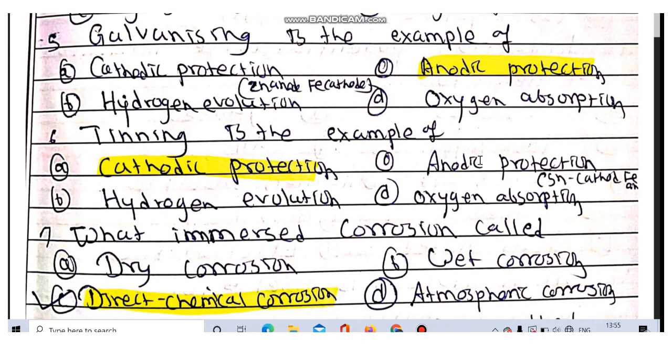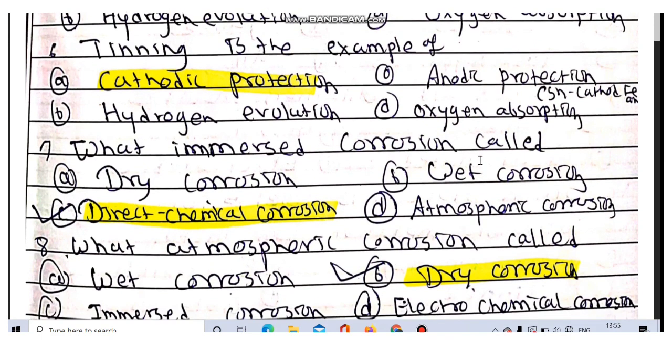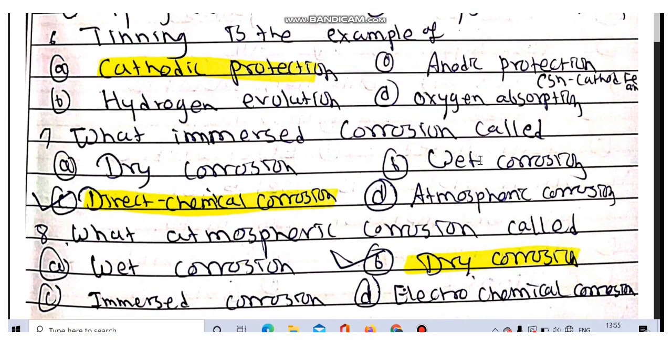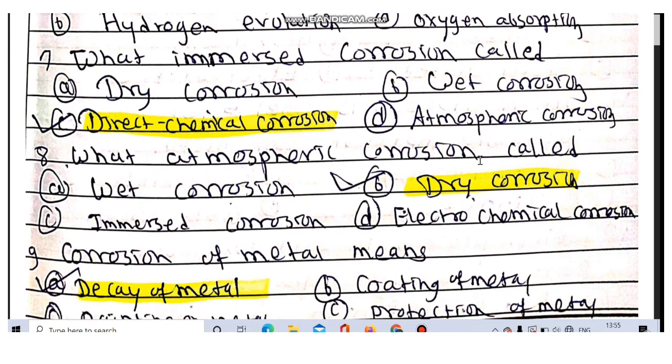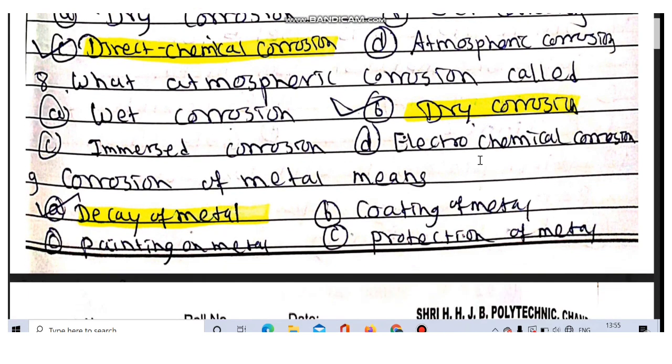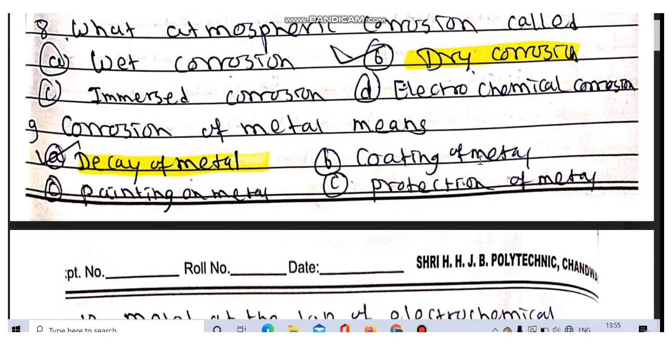What is immersed corrosion called? It is called direct chemical corrosion. What is atmospheric corrosion called? It is called dry corrosion. Question number 9 is corrosion of metal means the decay of metal or destruction of metal.